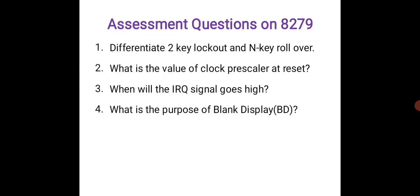This is the explanation of the various signals associated with 8279 and the functional blocks. These are assessment questions on 8279: differentiate two-key lockout and N-key rollover, what is the value of clock prescaler at reset, when does IRQ go high, and what is the purpose of the blank display. Thank you.